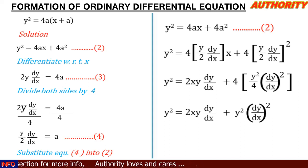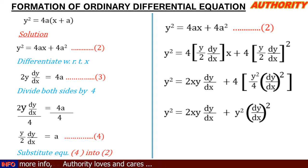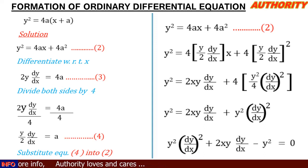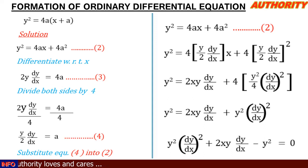Rearranging, we get y²(dy/dx)² + 2xy·dy/dx − y² = 0. Therefore, this is the differential equation corresponding to the function y² = 4a(x + a).